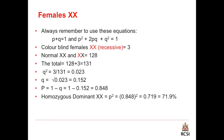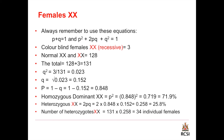We can multiply p squared by 100 to get the percentage, which equals 71.9%. To get the heterozygous frequency, we calculate 2pq, which equals 0.258, or 25.8%. To get the number of heterozygous females, we multiply the total number — 131 — by 0.258, which gives 34 individual females. That means there are 34 individual females who are carriers.